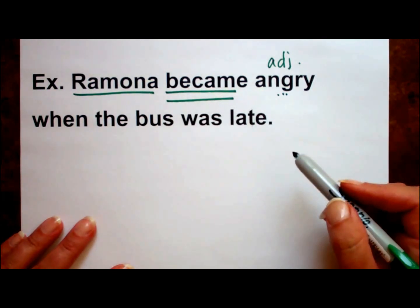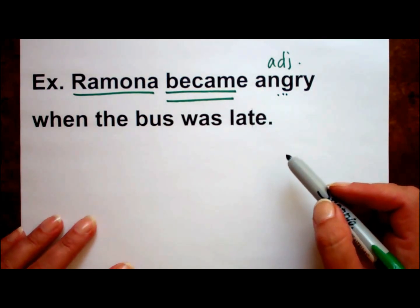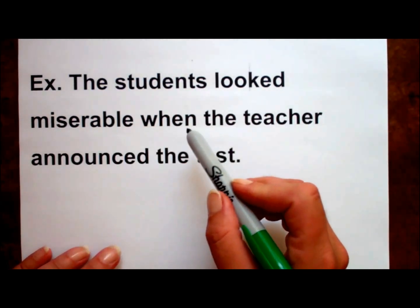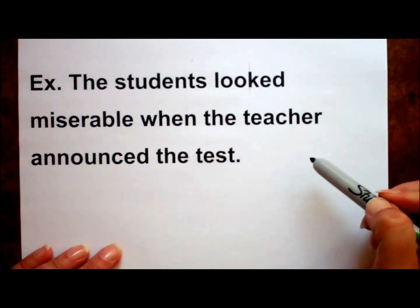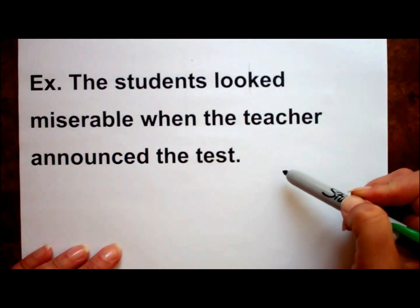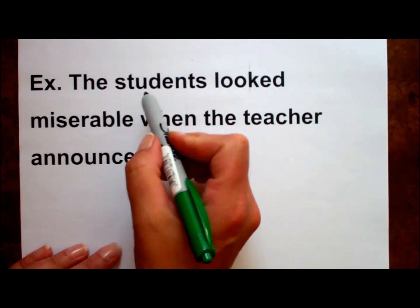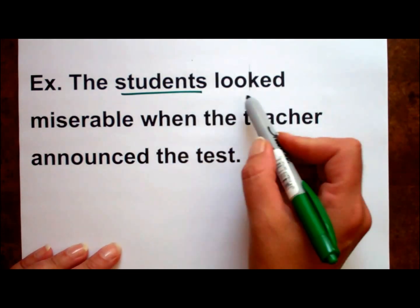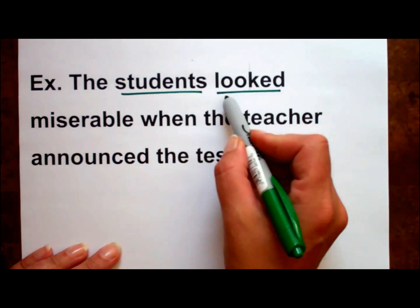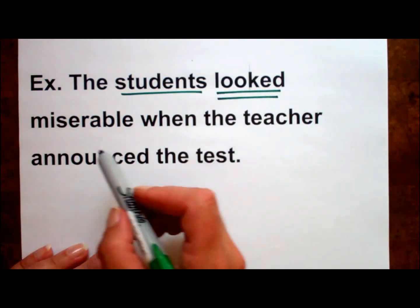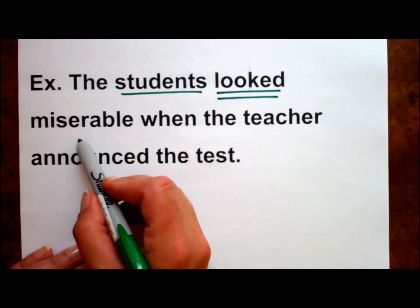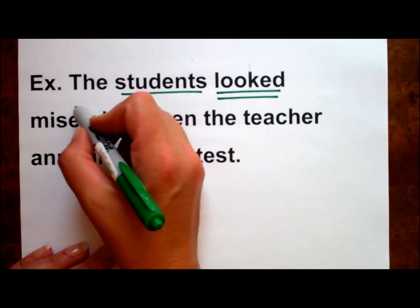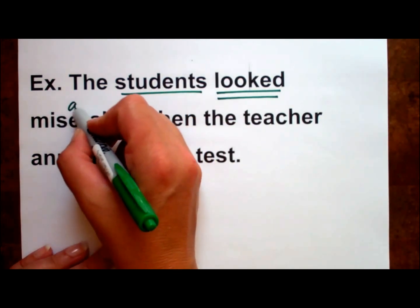Now let's mix them up and see if we can figure them out. The students looked miserable when the teacher announced the test. Students is our subject, looked is our linking verb, and miserable describes the students. Therefore, we have a predicate adjective.